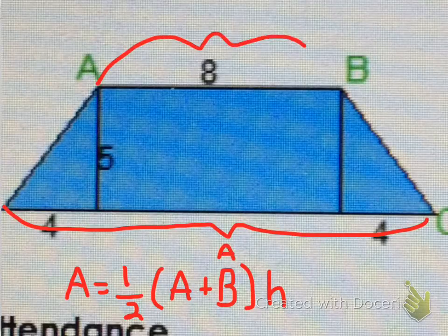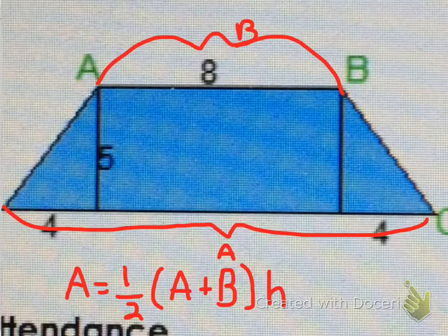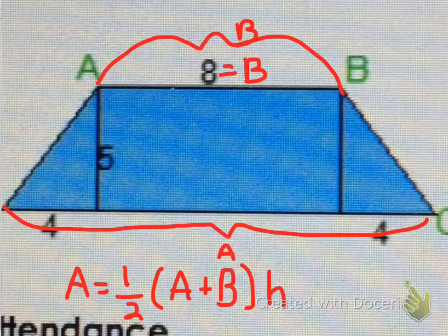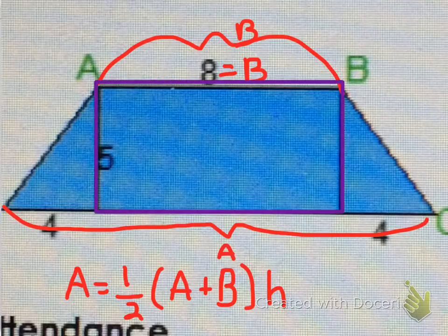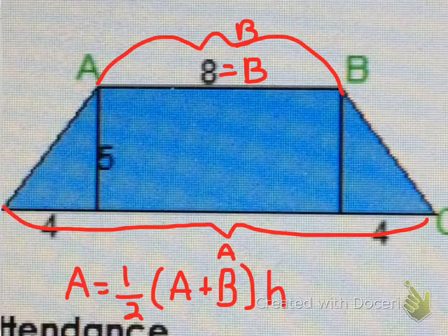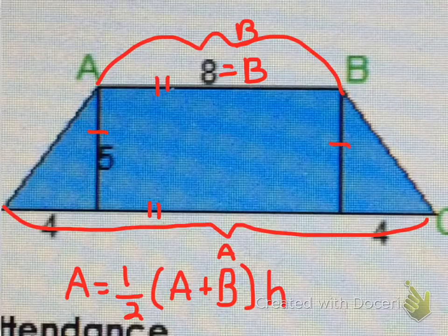B is this side. So we already know that 8 equals B, and we need to figure out what A is. Because this is a rectangle right here, we know that these two sides are going to be equal, just as these two sides are equal in length.